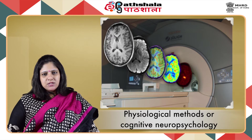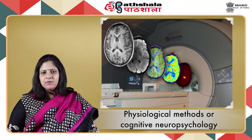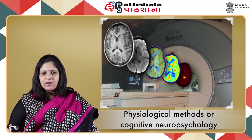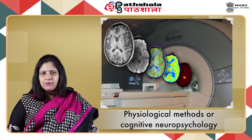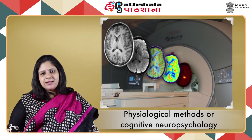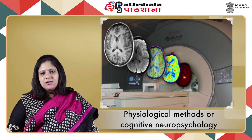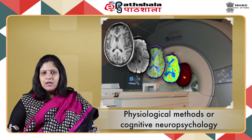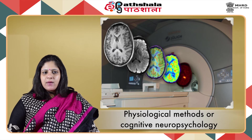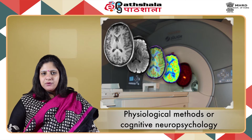Another method is PET scans, in which increased radio-labelled glucose activity is scanned in the brain while subjects engage in different cognitive processes. Spatial resolution is good whereas temporal resolution is not as strong. A third technique is functional magnetic resonance imaging (fMRI), which detects changes in blood flow to particular areas of the brain when those areas are active, providing both an anatomical and functional view of the brain.